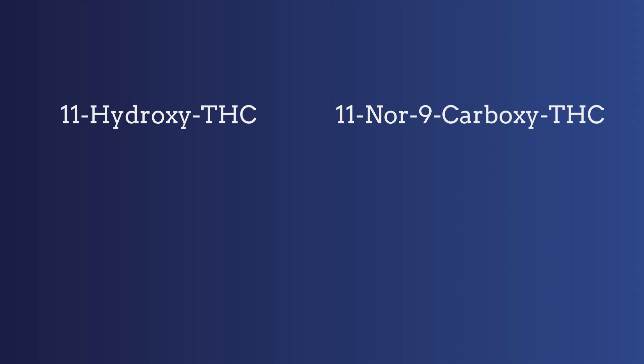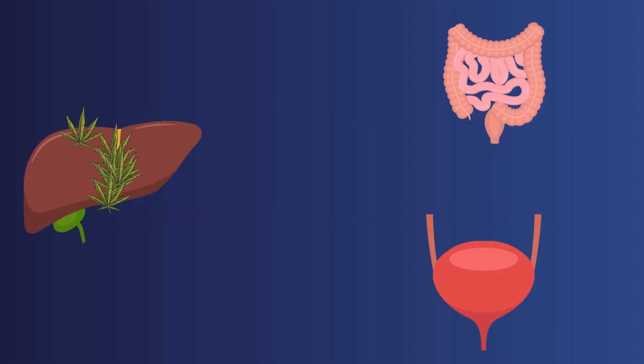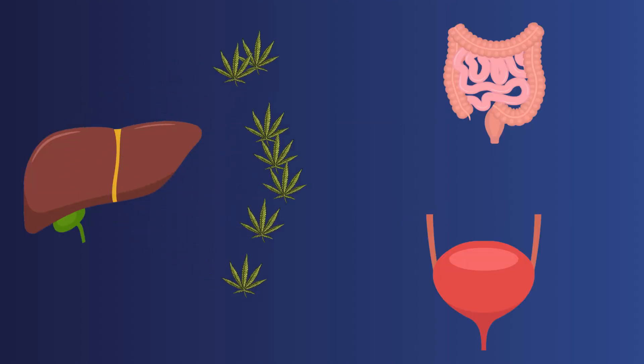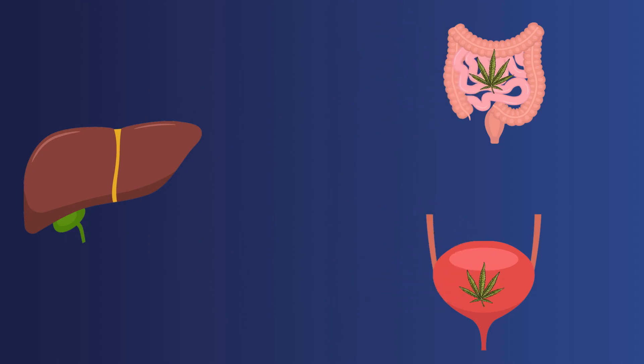During the second phase, THC metabolites are prepared for excretion. UGT enzymes add a glucuronide molecule to metabolites. These metabolites are soluble in water. They dissolve in the bile and water and are excreted into the urine and the intestines.